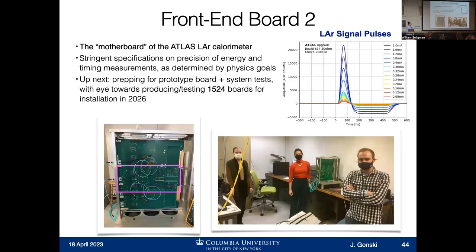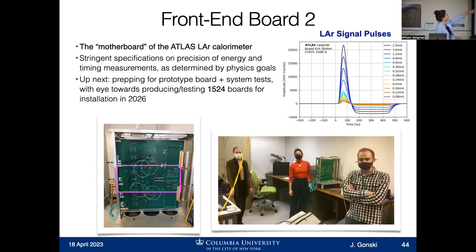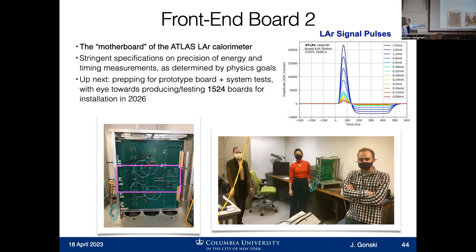Highlights from the next piece of the upgrade — the front-end board. You can think of the front-end board as the motherboard of the ATLAS liquid argon calorimeter. This is where all the controlling and processing of the data happens to turn this into something useful for physics analysis. There are really stringent specifications on what this board has to achieve based on our physics goals. This plot on the right shows what the signal looks like when it passes through these electronics — it has a nice peak where the max energy is deposited, and a width showing how long the signal takes to pass through the liquid argon. And this is one of the pre-prototype versions of this board that is sitting downstairs, where myself and students are poking and prodding and taking data from it.